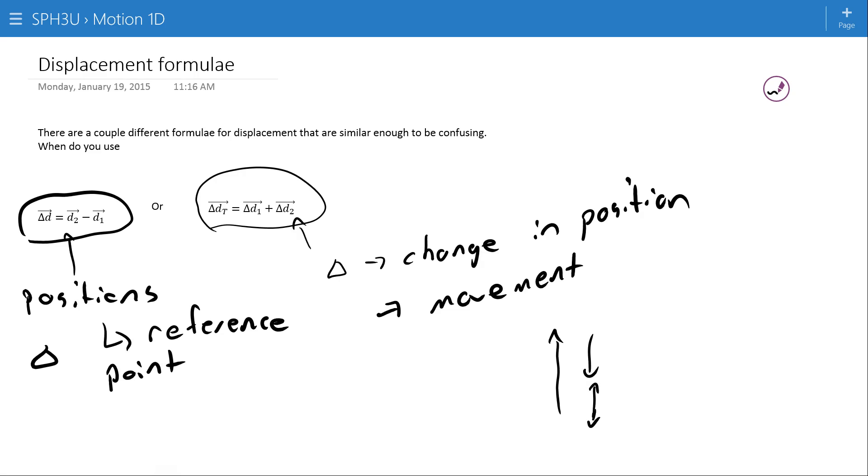Again, you should be using the wording, but what you're really looking for here is, this one should refer to where the object actually is at the end points of the movement. And this is referring to the movement itself.